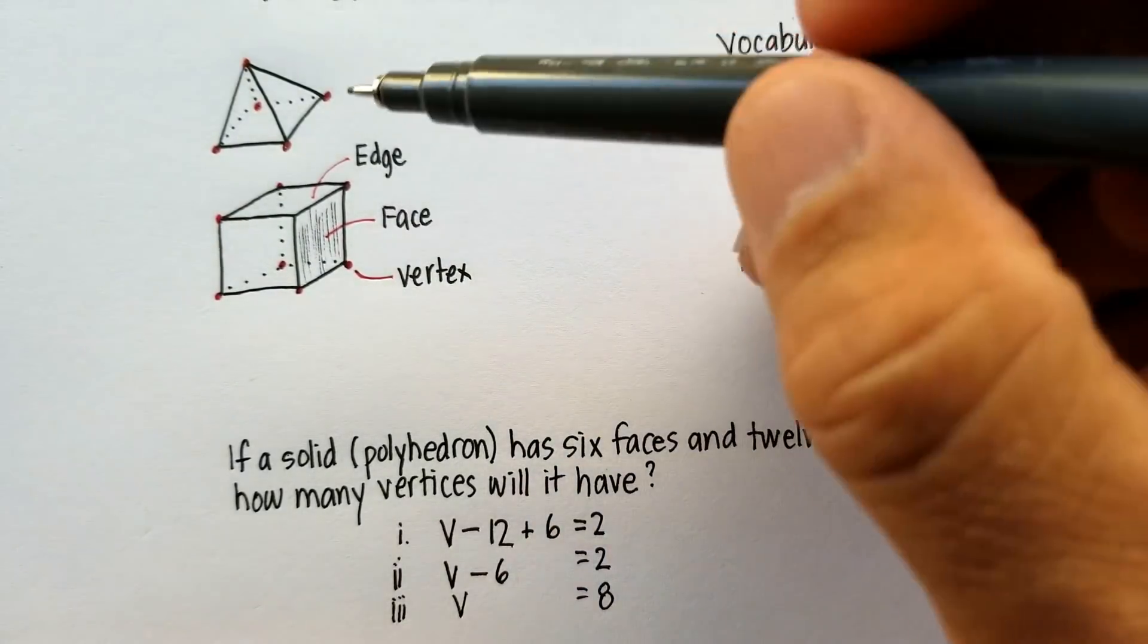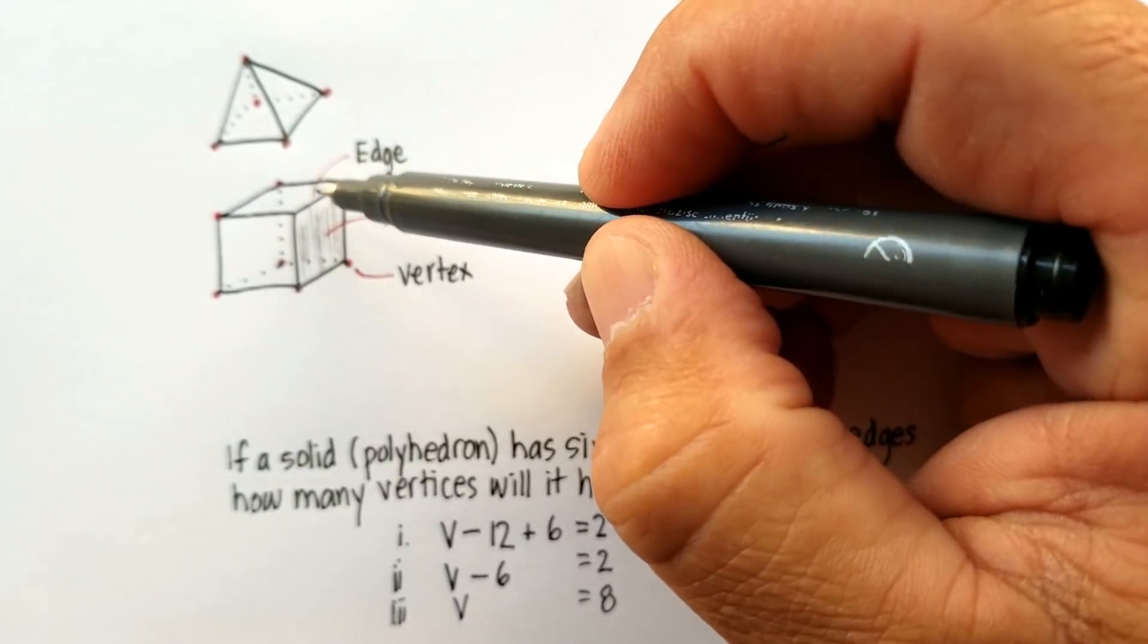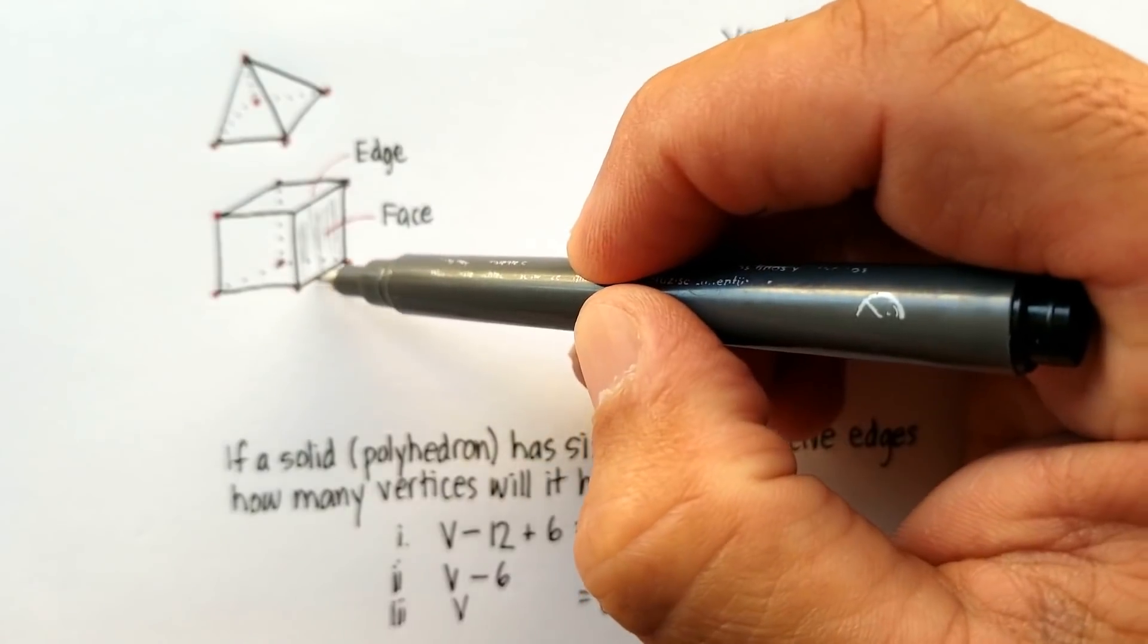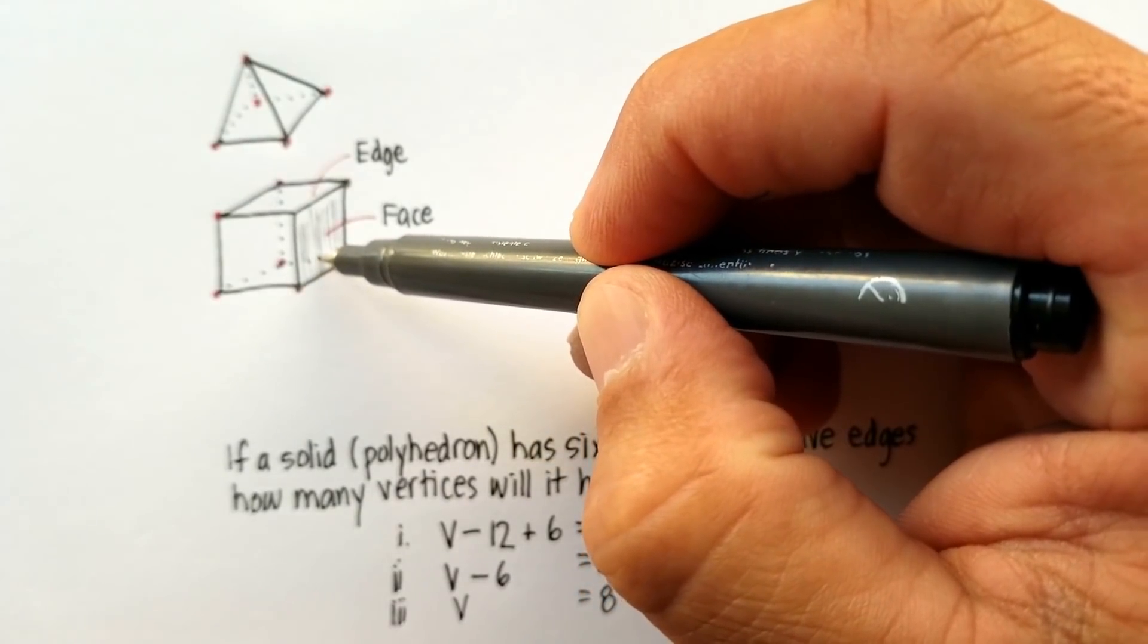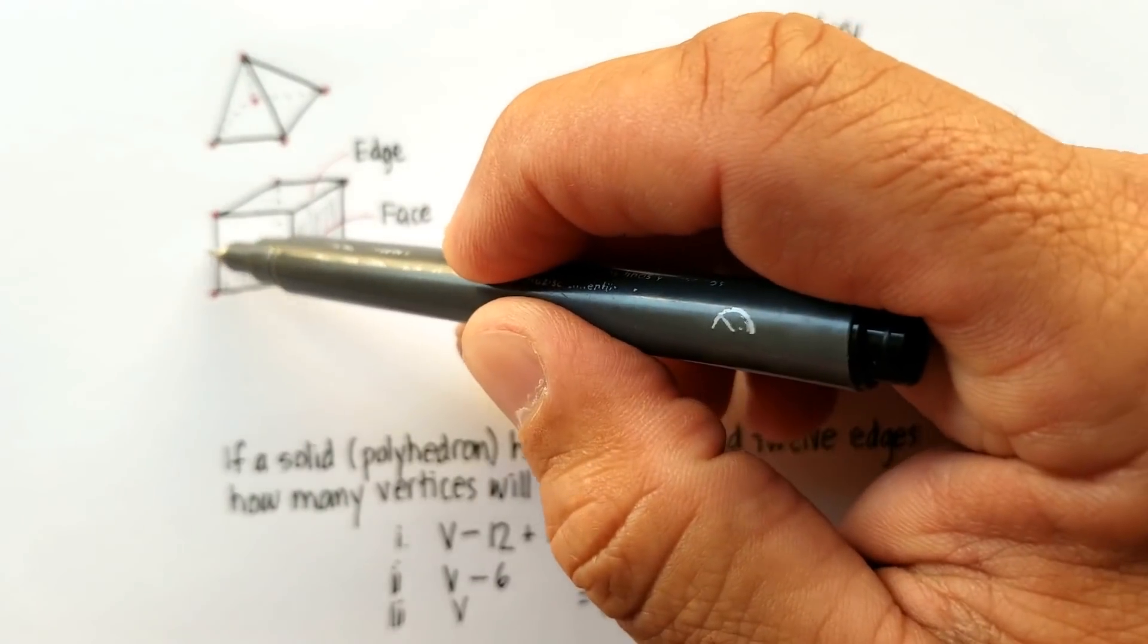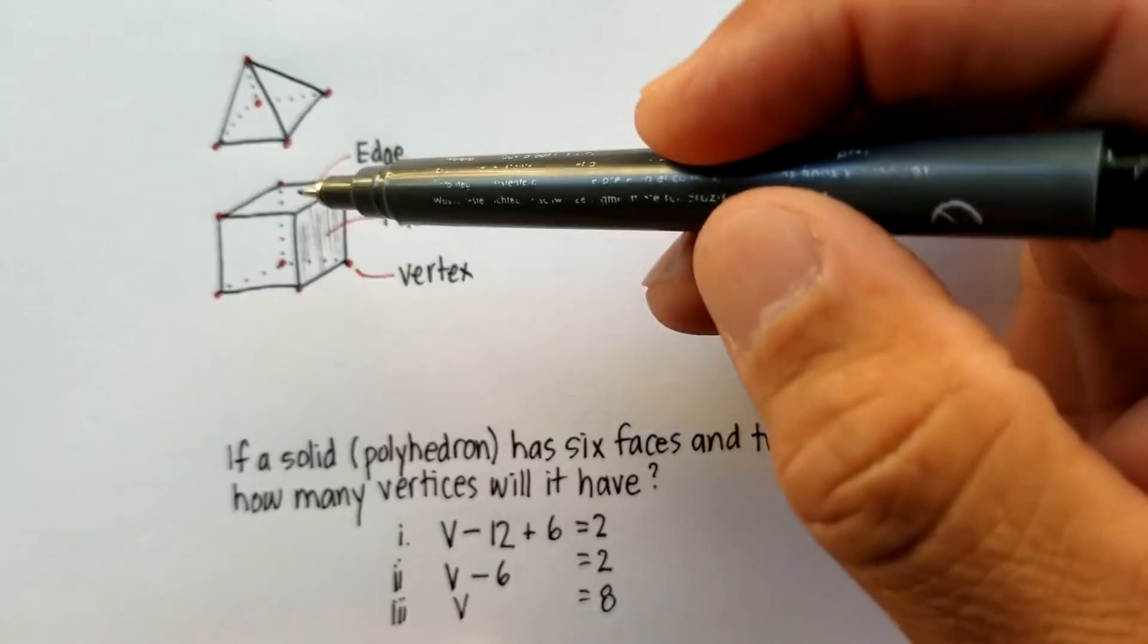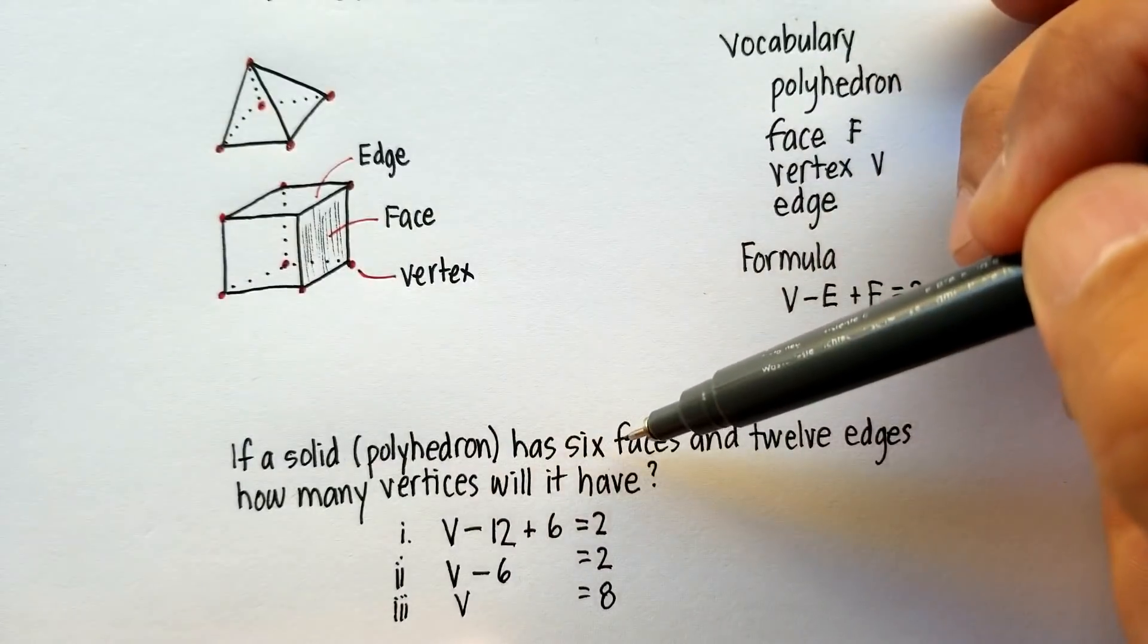How many edges do we have? Let's count. One, two, three, four. Let's go to the bottom. Five, six, seven, eight. Let's go along the sides now. Nine, ten, eleven, twelve. So, actually a cube fits this solid polyhedron.